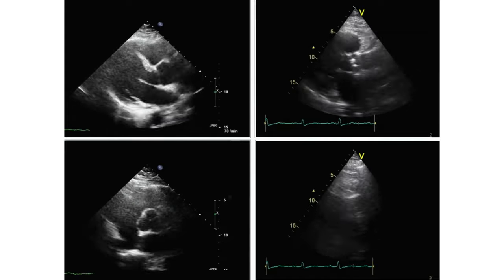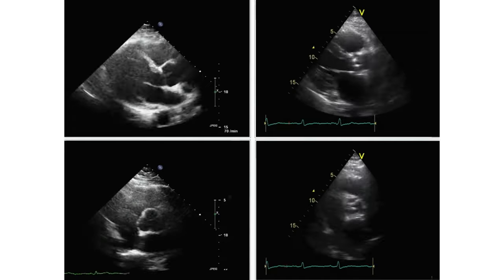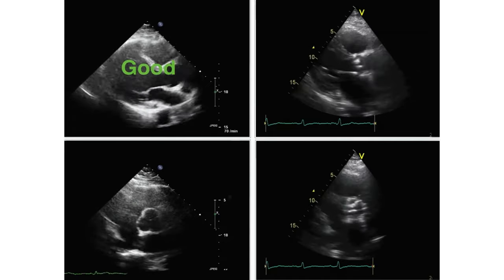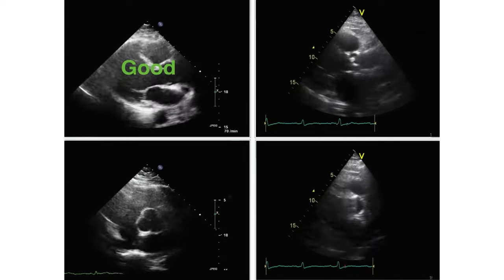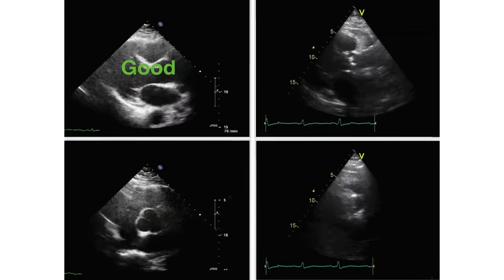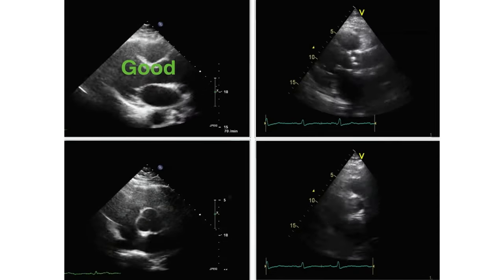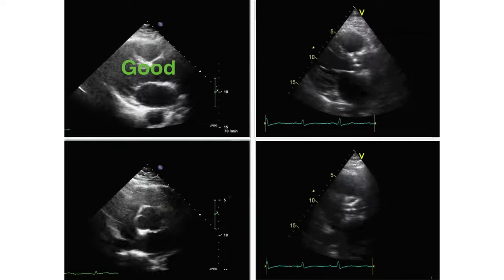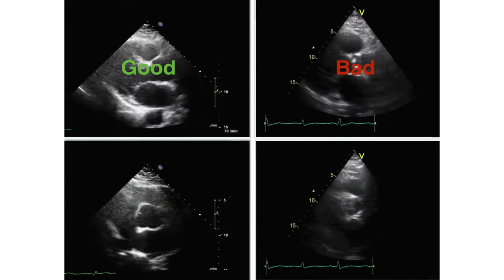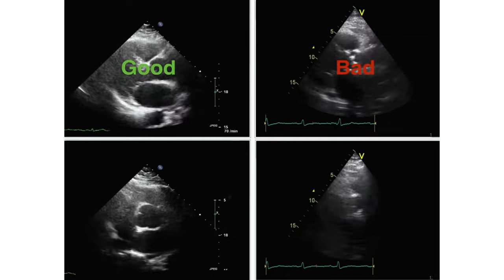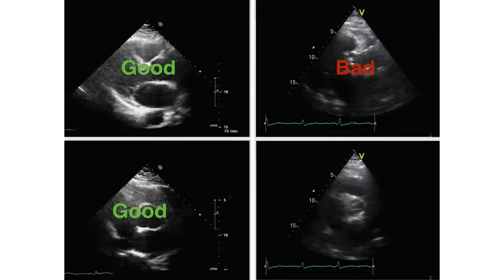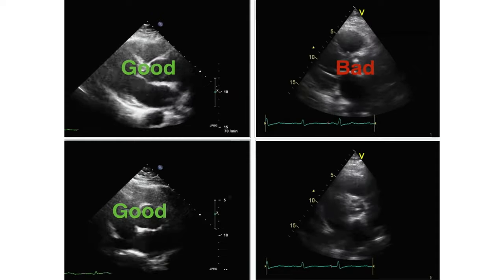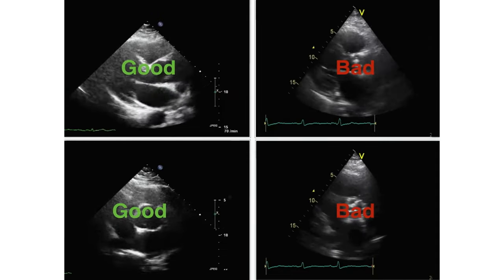The first aortic valve is good. The second aortic valve is really calcified — this cannot be anything apart from bad. The third is good. The fourth is bad.